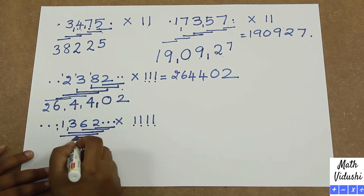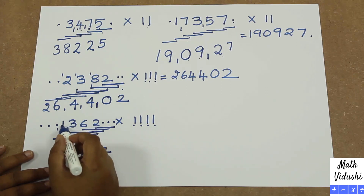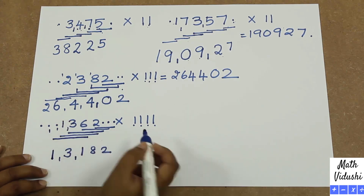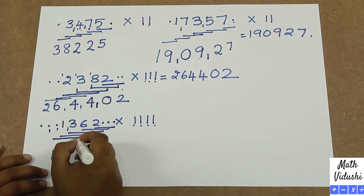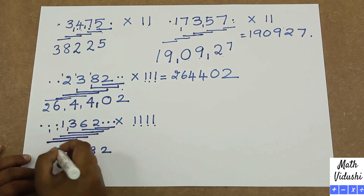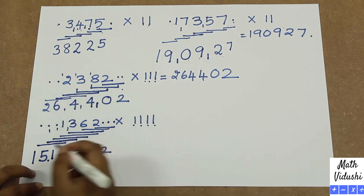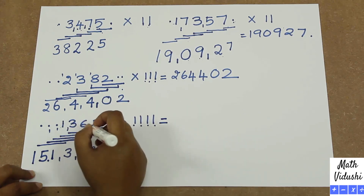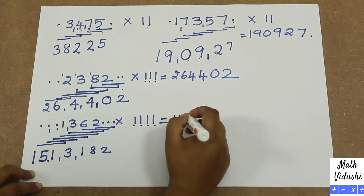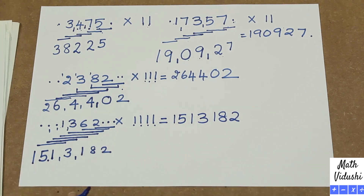Then taking 4 numbers: 6 plus 3 is 9, so write the units place and put the carryover. Then you have 3 plus 1 is 4, plus 1 is 5. And the last four digits: 1 plus 0 plus 0 plus 0 is 1. So the answer for 1362 multiplied by 1111 is 1,513,122.